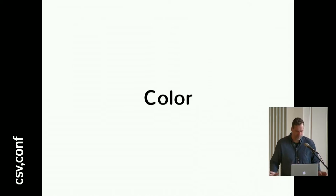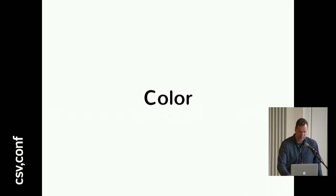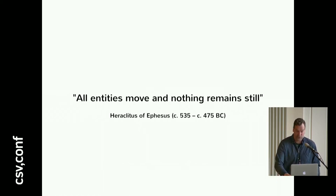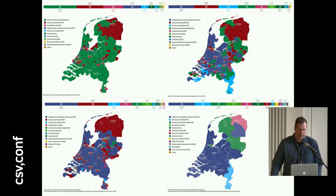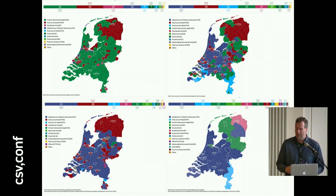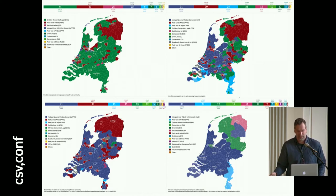Now something a little bit more experimental in this election project — it's about color. All entities move and nothing remains still, things change. And so, how do you do that with color? How do you have consistency over time? Here you have the Netherlands elections 2006, 2010, 2012, and 2017. And you see, if you have consistent colors, it's really nice — you can see what's happening over time, how parties kind of fade away, new parties come and take over, or some parties can come up or go back.